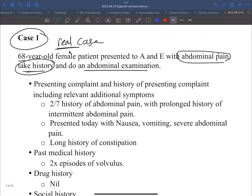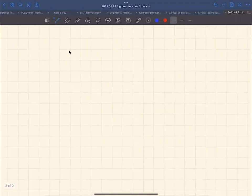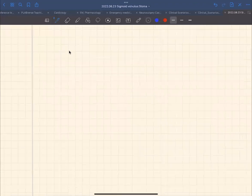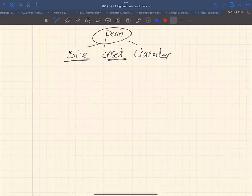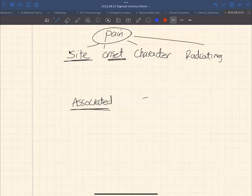So in terms of the abdominal history, we're talking about abdominal pain first. You need to take the history of pain itself. You need to assess where is this pain, the onset of this pain, the character of this pain, is it radiating anywhere, and are there any associated symptoms with it. Any associated symptoms, anything that can increase it, and anything that decreases it.